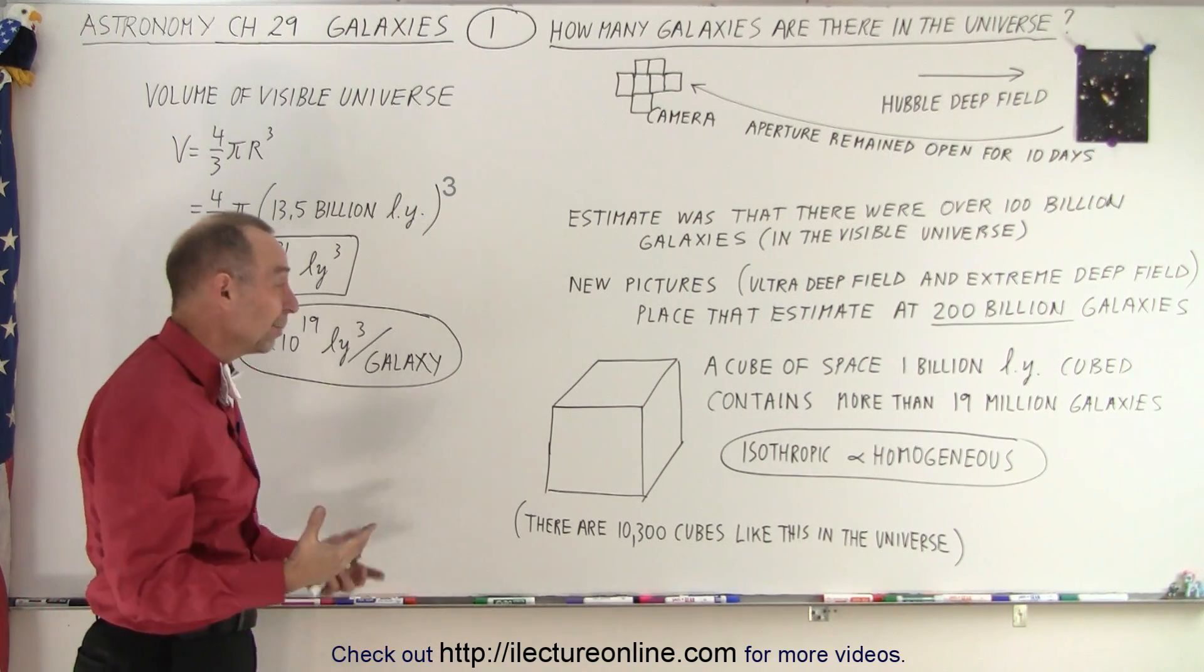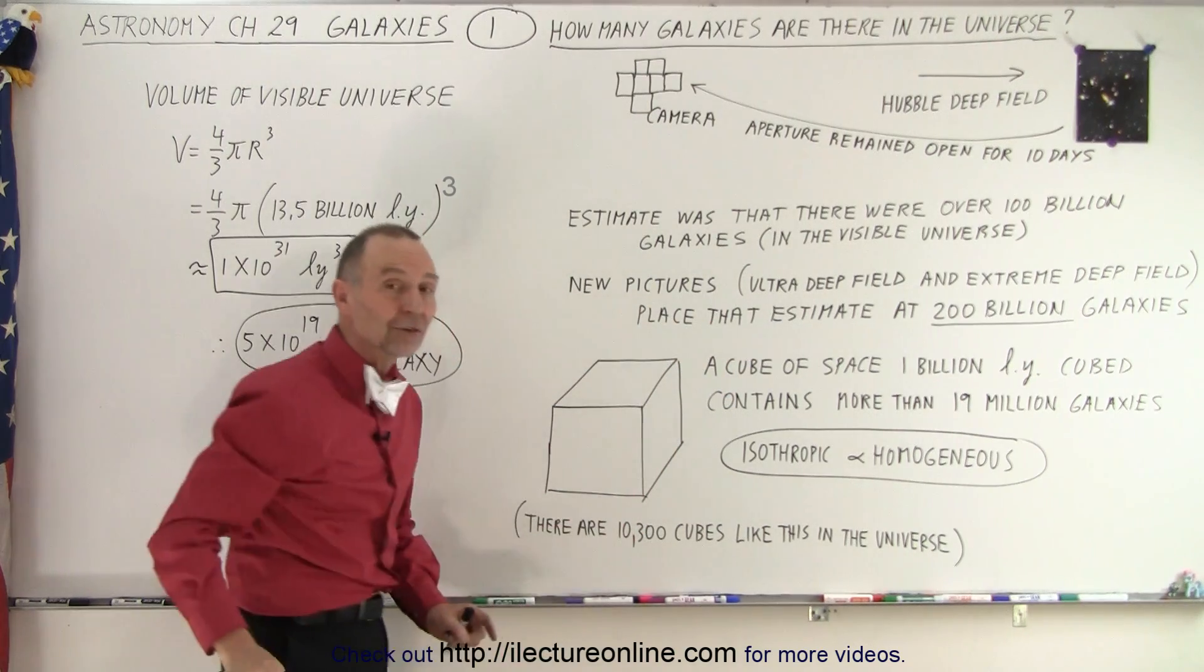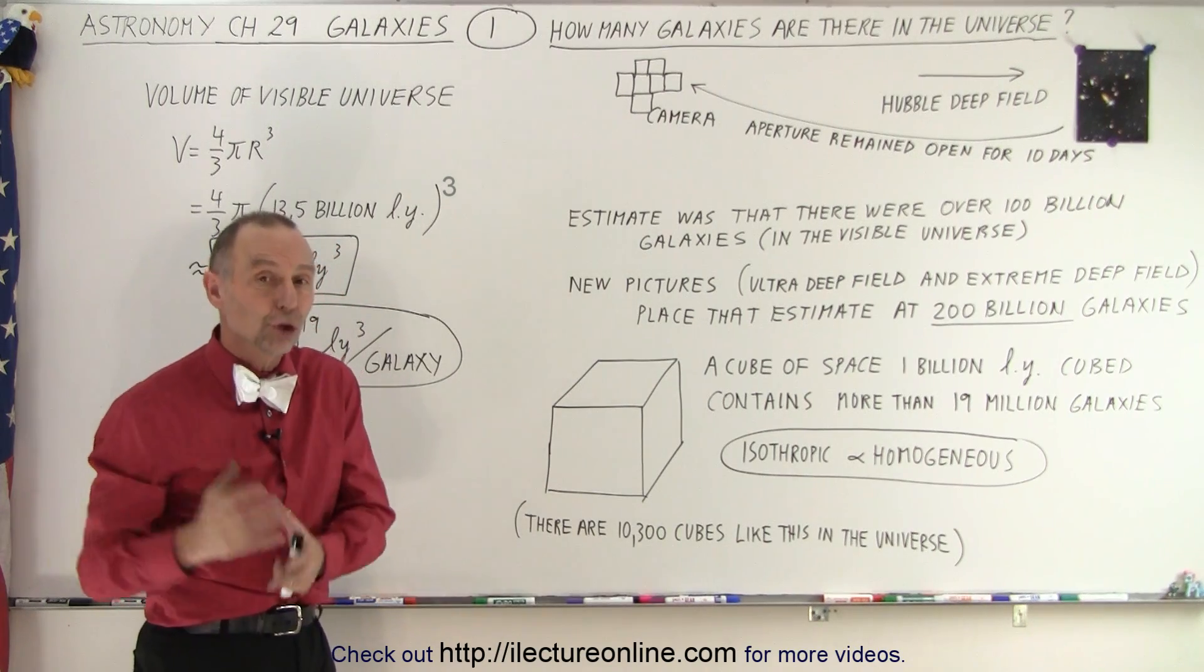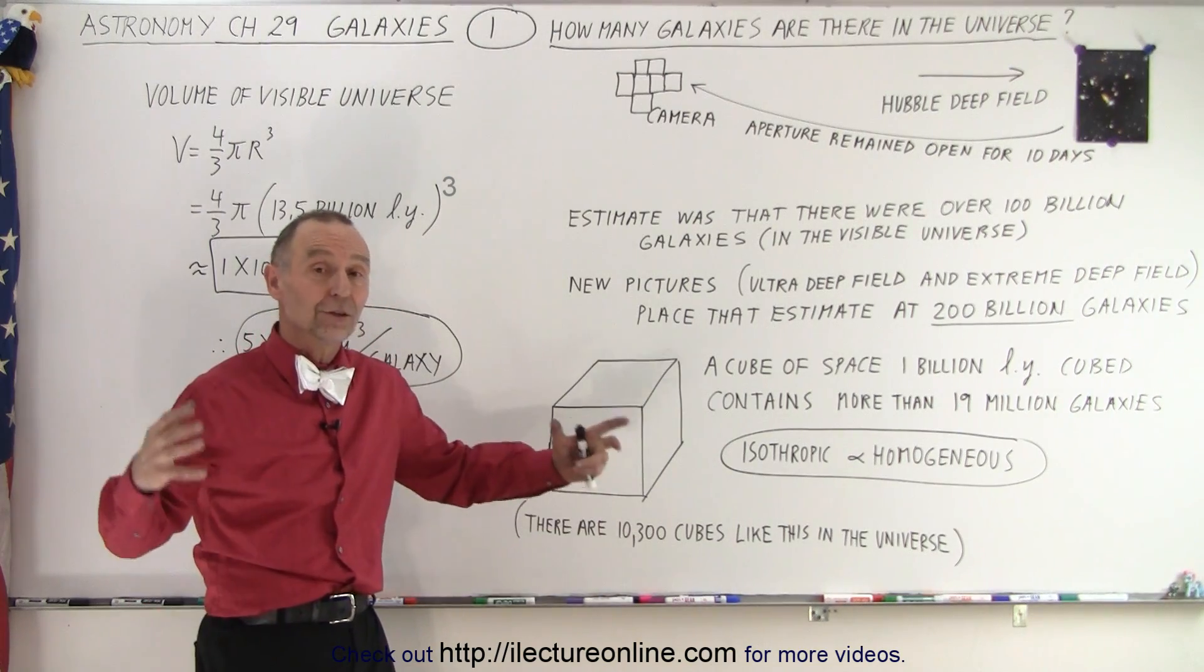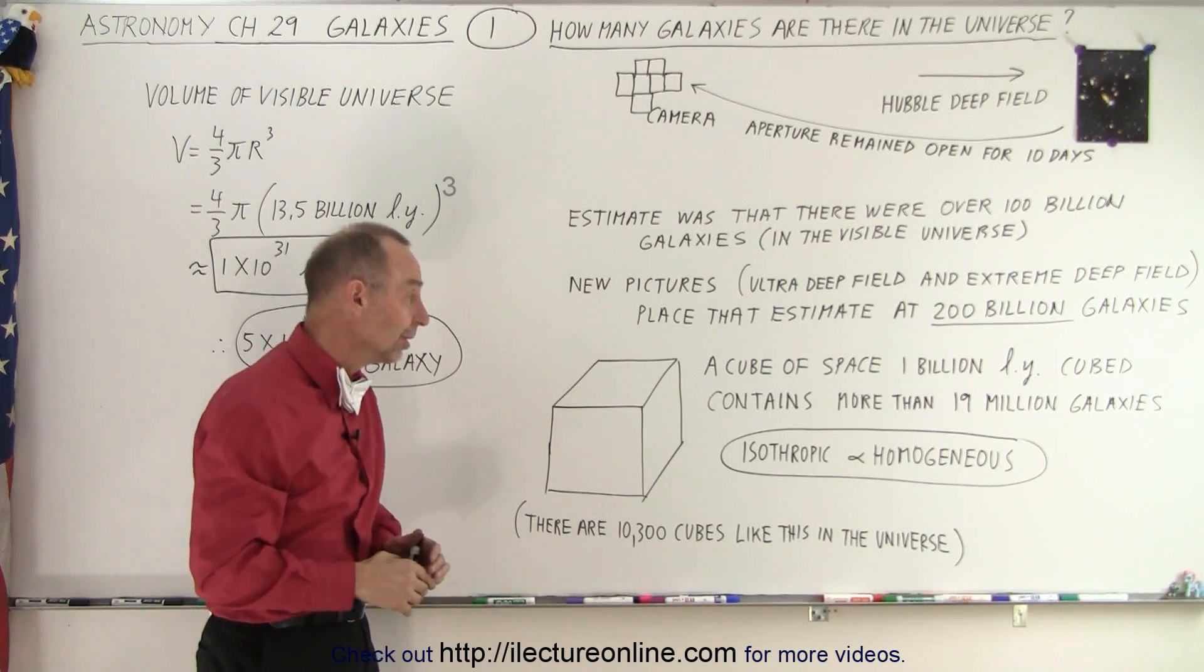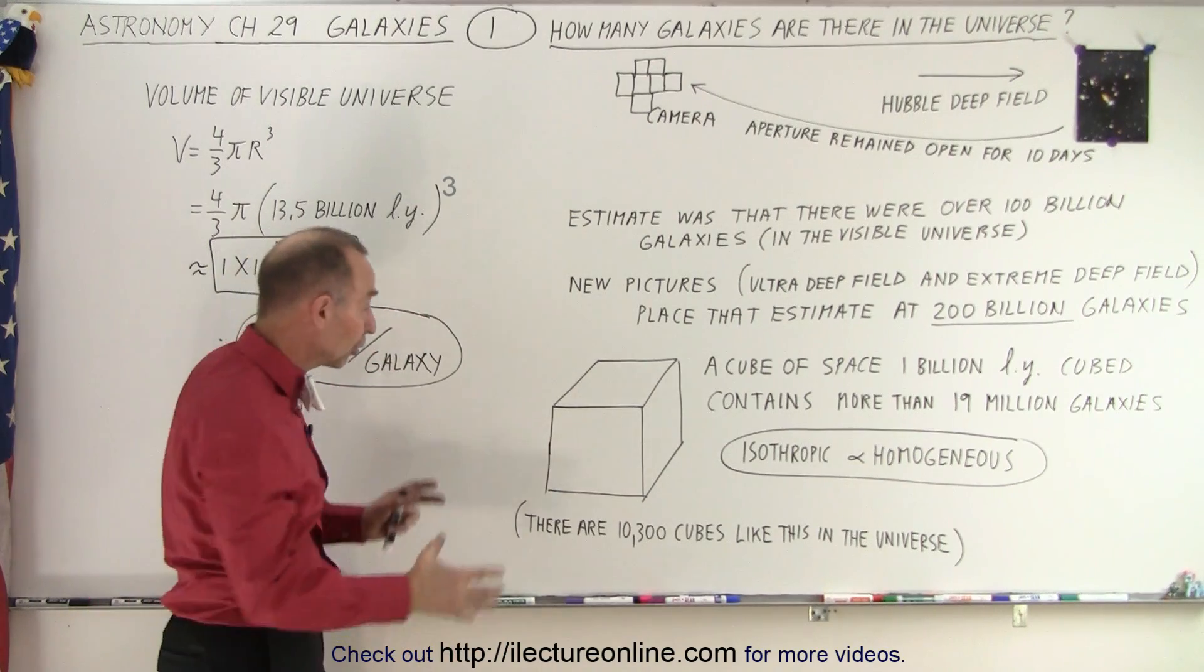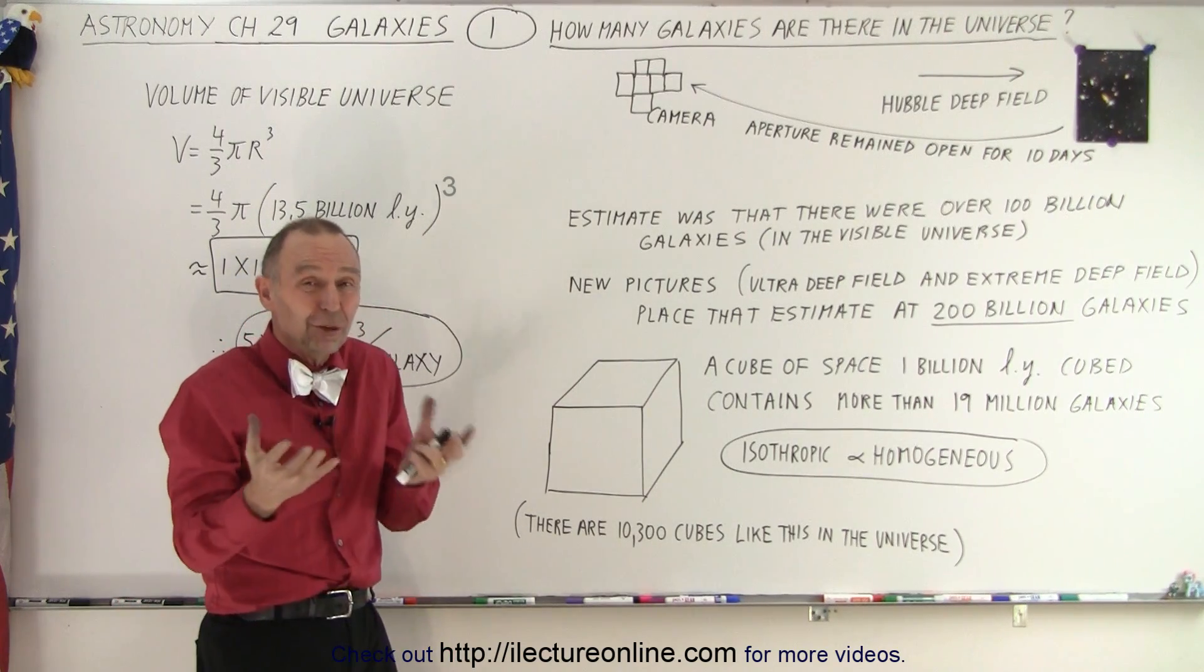Not that that means anything really, those are just big numbers but there's another way of looking at it. So let's say we have a cube and the cube is 1 billion light years on each side. So the volume of that cube is 1 billion light years cubed. How many of those cubes would you have inside the universe? And it turns out there's about 10,300 of those cubes in our visible universe. So if we take the 200 billion galaxies and divide it by 10,300 that means there's about 19 million galaxies in each one of those cubes. And so if we took a look at one of those cubes you'd see 19 million galaxies in there and then you'd look at another cube and see 19 million galaxies, what you find is that there's really no difference in the way each of those cubes look.